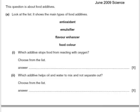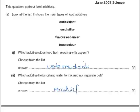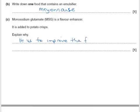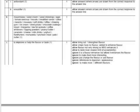Some exam questions. This question is about food additives — look at the list showing the main types: antioxidant, emulsifier, flavour enhancer, food colour. Which additive stops food from reacting with oxygen? That would be in the name — antioxidant. And which additive helps oil and water to mix and not separate out? That would be emulsifier. Write down one food that contains an emulsifier — mayonnaise. Monosodium glutamate is a flavour enhancer added to potato crisps to improve the flavour. There are a vast amount of allowable foods which contain emulsifiers to choose from.